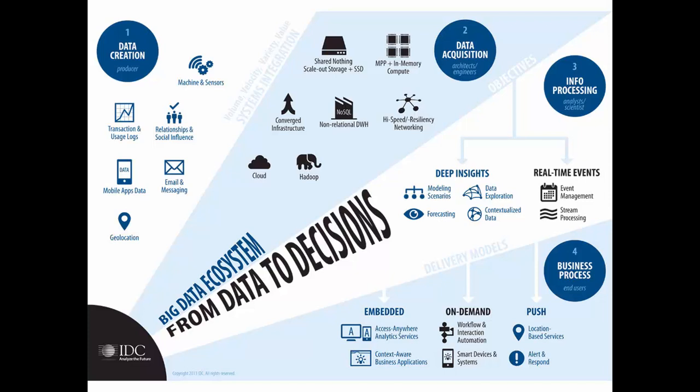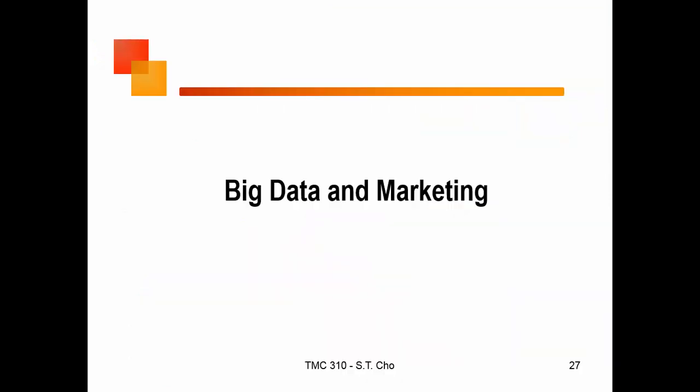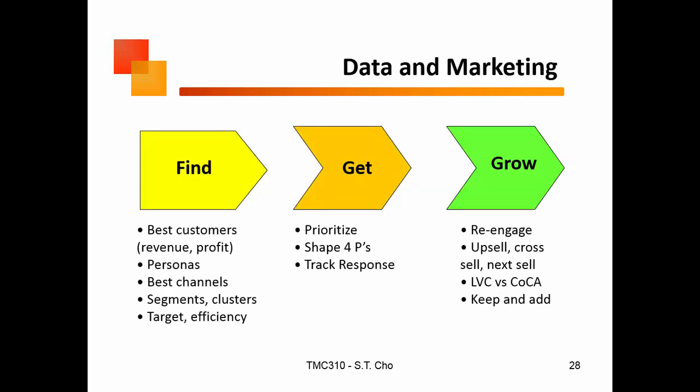So picking up last time when we left off, this is the big data ecosystem. These are the elements that go into big data. And so next we're going to talk about big data and how it relates to marketing. And what it comes down to is all of marketing is about finding customers, getting customers, and growing customers.